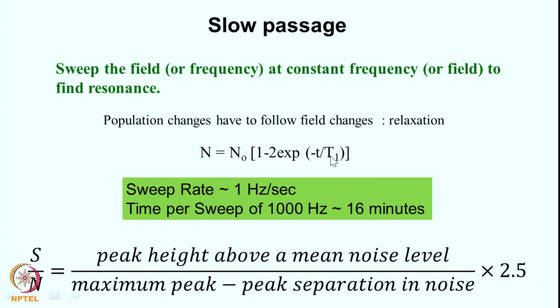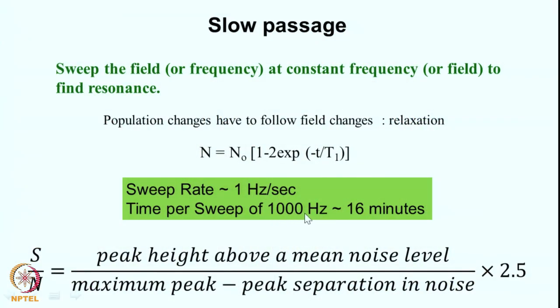If T1 is of the order of seconds, you cannot sweep the field too fast, otherwise you will not be reaching an equilibrium situation at every point. Typically, sweeping at 1 Hz per second over a spectrum of width 1000 Hz — which corresponds to 10 ppm on a 100 MHz spectrometer — would take approximately 16 minutes for one sweep.